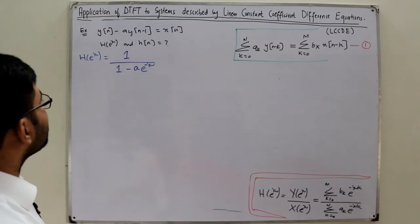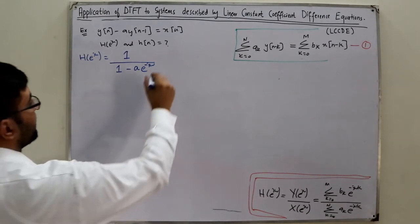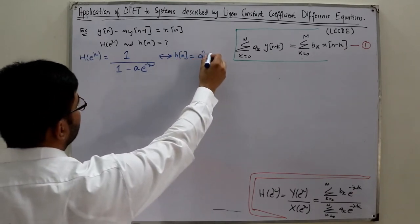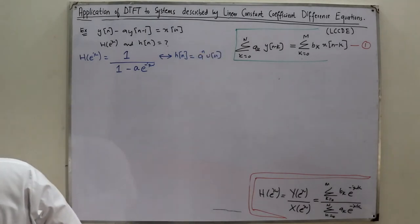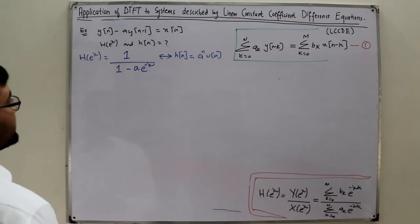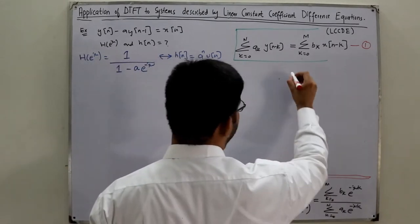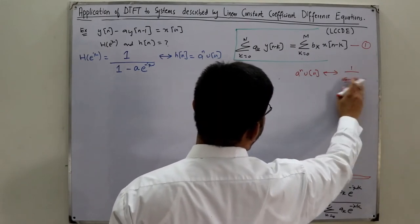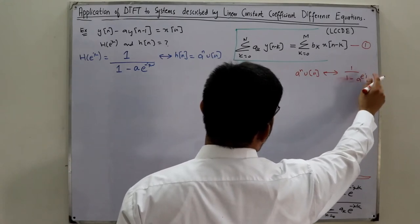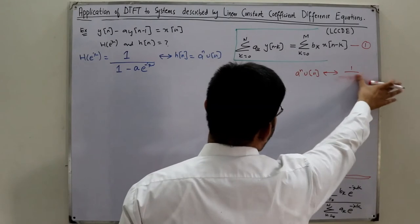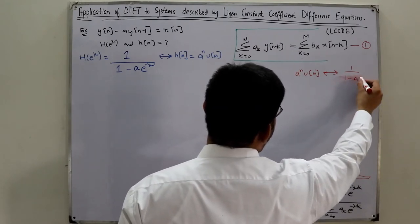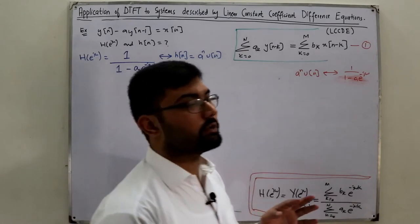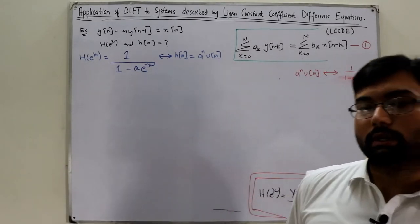The frequency response is H(e^jω) = 1 / (1 - a·e^(-jω)). For the corresponding impulse response, using the basic discrete-time Fourier transform pair, a^n·u(n) has the DTFT pair 1/(1 - a·e^(-jω)). So h(n) = a^n·u(n). This is a fundamental transform pair, and I suggest studying all the basic pairs given in the book.